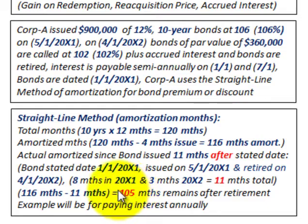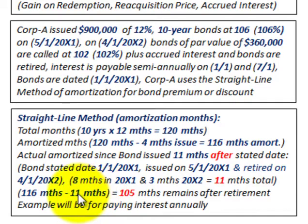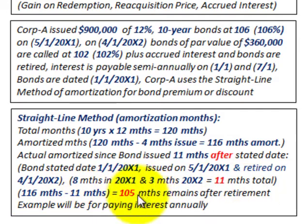What remains to be amortized on these bonds: we had a total of 116 months to amortize, and the first 11 months were amortized up to the retirement date. The difference gives us 105 months remaining after the retirement date. Also, for ease of calculations, even though we have semi-annual interest payments, we'll just look at paying this interest annually.